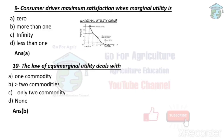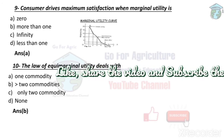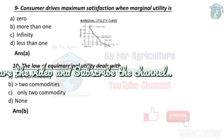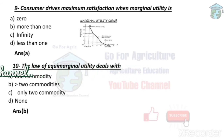A consumer derives maximum satisfaction when marginal utility is zero. Marginal utility is the point where you get the most satisfaction. For example, if you eat two apples and your hunger is completely gone, your marginal utility becomes zero — you've gained maximum satisfaction from eating those two apples. When maximum satisfaction is reached, marginal utility equals zero.